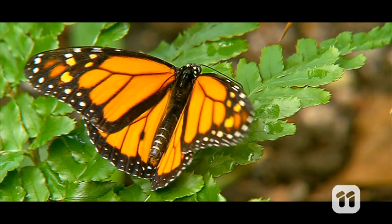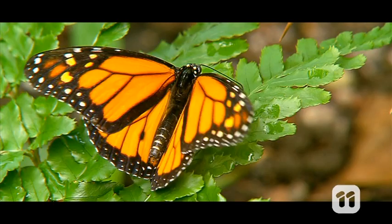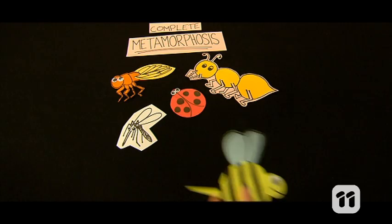Then the adult butterfly goes on to lay eggs and starts the cycle again. But there are loads of other insects that go through complete metamorphosis too.